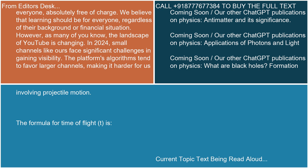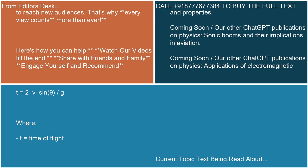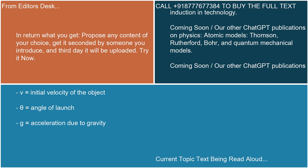The formula for time-of-flight t is: t = 2v sin(θ) / g, where t equals time-of-flight, v equals initial velocity of the object, θ equals angle of launch, and g equals acceleration due to gravity.